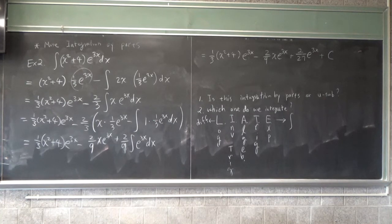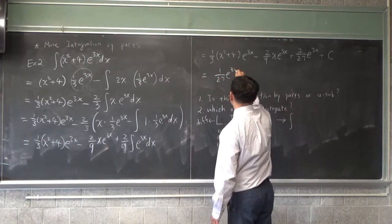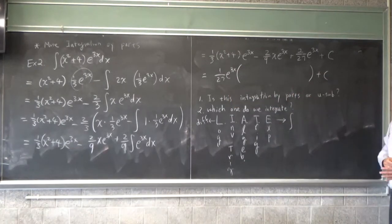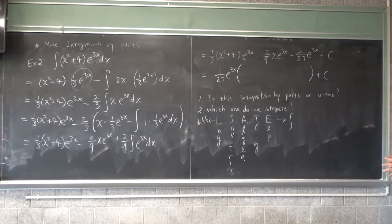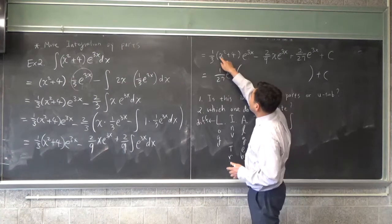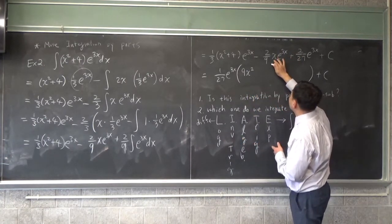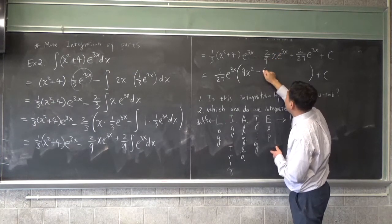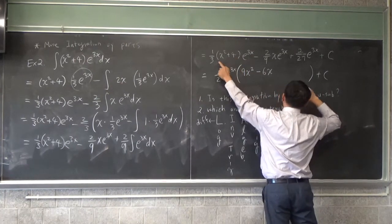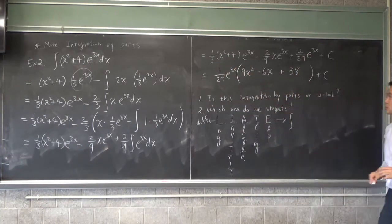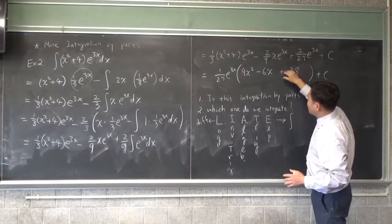Now, it's not necessary, but it will be nice if you can actually factor this. 1 over 27 e to the 3x out. Because if you're using the result of an integral for some other purposes, sometimes you want to simplify. So, in that case, let's see. One-third is 9 over 27, so this is really 9x squared. And two-ninths is six over 27, so this is negative 6x. And then this is 36 over 27 plus 2 over 27, so it's overall 38. So, you can write this as the result, okay? If this was a simple integration question, this would be enough. I'll give you full credit, but it's good to simplify that. All right.